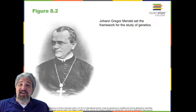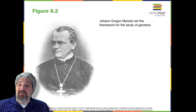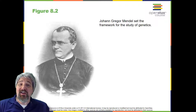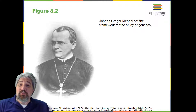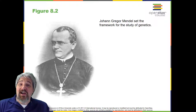Mendel's work went virtually unnoticed by the scientific community, which incorrectly believed that the process of inheritance involved a blending of parental traits that produced an intermediate physical appearance in offspring. This hypothetical process appeared to be correct because of what we now know as continuous variation — the range of small differences we see among individuals in a characteristic like human height. Mendel worked instead with traits that showed discontinuous variation: a variation seen among individuals when each individual shows one of two, or a very few, easily distinguishable traits, such as violet or white flowers. Mendel's choice of these kinds of traits allowed him to see experimentally that the traits were not blended in the offspring, but were inherited as distinct traits.